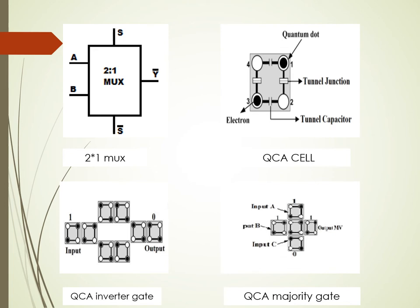What is QCA? QCA stands for Quantum Dot Cellular Automata. When we look at the structure of a QCA cell, it is a square shape having four dots. All dots are connected with tunnel junctions, and inside the dots we have electrons. The entire design is called one QCA cell, and we have two types of cells: either logic zero or logic one.